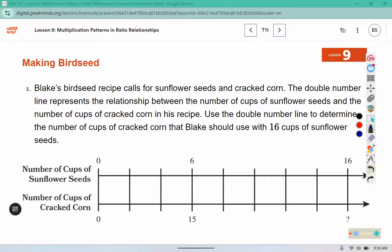Blake's bird seed recipe calls for sunflower seeds and cracked corn. The double number line represents the relationship between the number of cups of sunflower seeds and the number of cups of cracked corn in his recipe. Use the double number line to determine the number of cups of cracked corn that Blake should use with 16 cups of sunflower seeds.